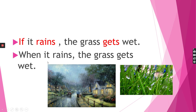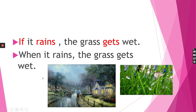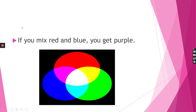I want you to also pay attention to verb-subject agreement. Here we have the subject 'it' and the verb 'rains' in the present simple. If you mix red and blue — do you see the red color here and the blue color here? — you get purple.